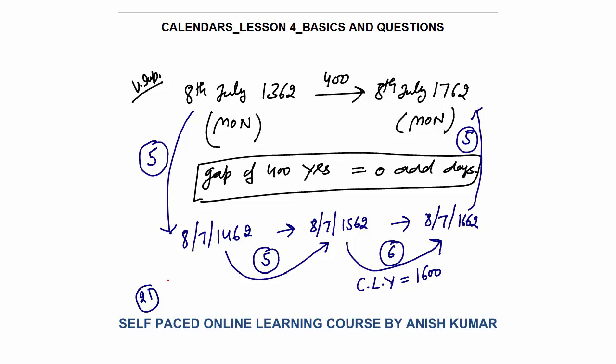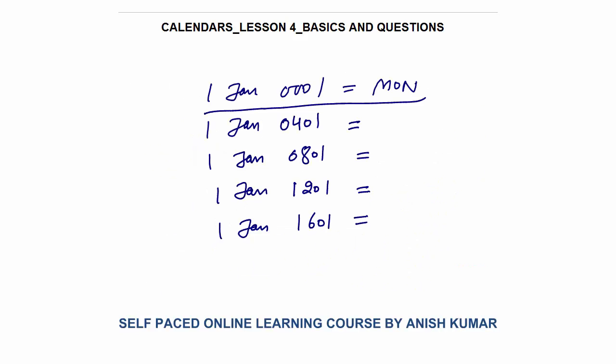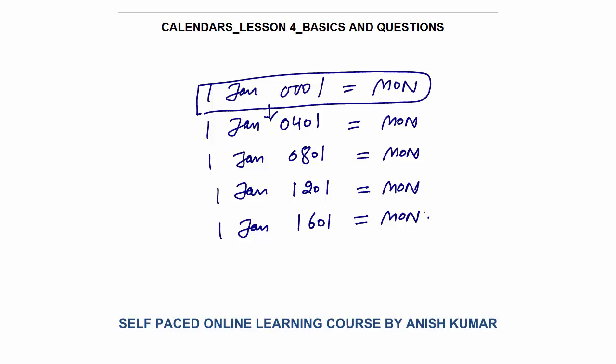So very importantly, a gap of 400 years will always have 0 odd days. Now we know that the first day on the calendar was Monday — 1st January 001 is Monday. With a gap of 400 years, the day remains the same: so 1st January 0401, 0801, 1201, 1601 are all Monday. Similarly, 1st January 2001 and 2401 will also be Monday. These are the benchmark dates to calculate questions faster.